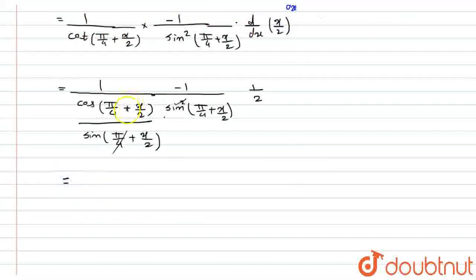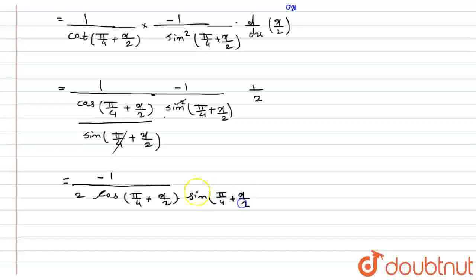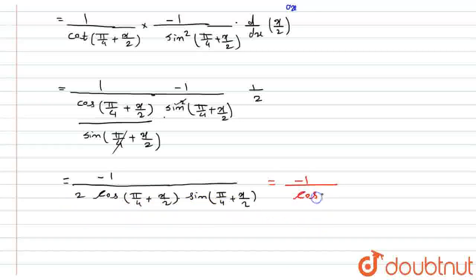Further solving, what remains is minus 1 upon 2, into cos(π/4 + x/2) into sin(π/4 + x/2). Now, 2·cos(θ)·sin(θ) equals sin(2θ), so 2·cos(π/4 + x/2)·sin(π/4 + x/2) is equal to sin(2·(π/4 + x/2)), which equals cos(x) — wait, it simplifies to cos(x). The 2 cancels, giving minus 1 upon cos(x), which equals minus sec(x).